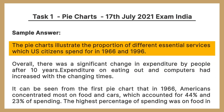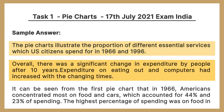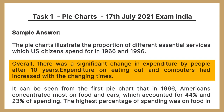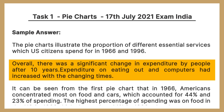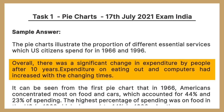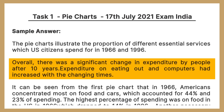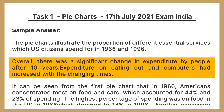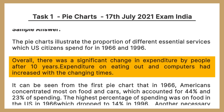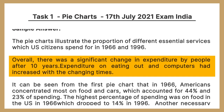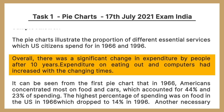The sample answer is: the pie charts illustrate the proportion of different essential services which US citizens spent on in 1966 and 1996. Overall, there was a significant change in expenditure by people after 30 years. Expenditure on eating out and computers had increased with the changing times.